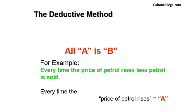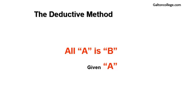The price of petrol rises, A, less petrol is sold as B, and we've got every time. We're using symbols here. We're using letters to represent an argument, to represent a piece of reasoning. That's where the A and the B comes from. There's nothing to be scared about. All A is B. And now, let's say we're given A. A applies. Therefore, B.